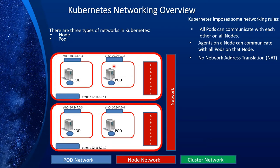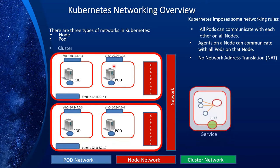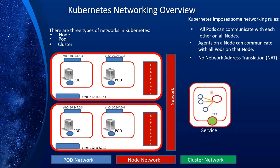Last but not least is the cluster network. The cluster network is used by services — all services use this network, and the IP addresses on this network are allocated from a range specified in the service cluster IP address range parameter, which is part of the API server and controller manager configuration. By default it has a range of IPs, but we can also define our own range if needed.